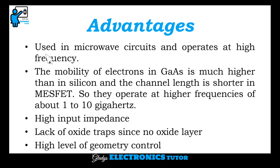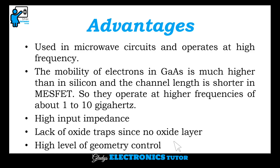The advantages are: it is used in microwave circuits and operates at high frequency. The mobility of electrons in gallium arsenide is much higher than in silicon, and the channel length is shorter in MESFET, so it operates at higher frequencies of about 1 to 10 GHz. Other advantages include high input impedance, lack of oxide traps since there is no oxide layer, and a high level of geometric control.